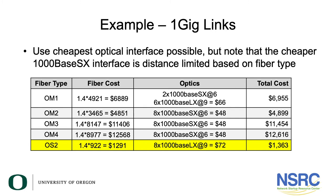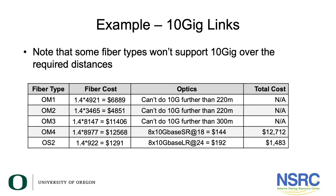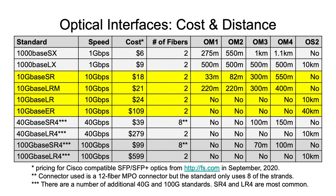If we move to 10 gig, note that some fiber types won't support 10 gig over the required distances. OM1 and OM2 won't do 10 gig farther than 220 meters, and OM3 won't do 10 gig farther than 300 meters. So OM1, OM2, and OM3 can't build this network.